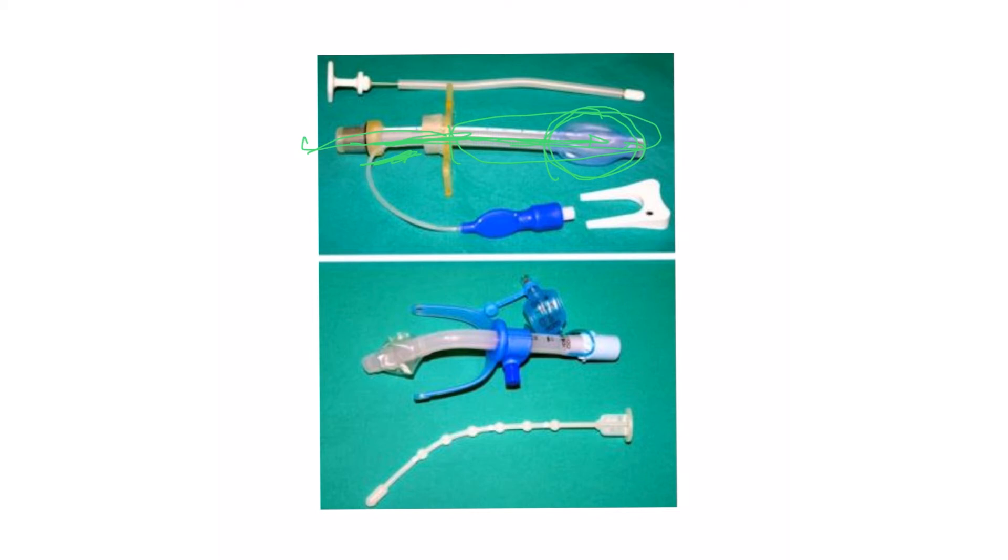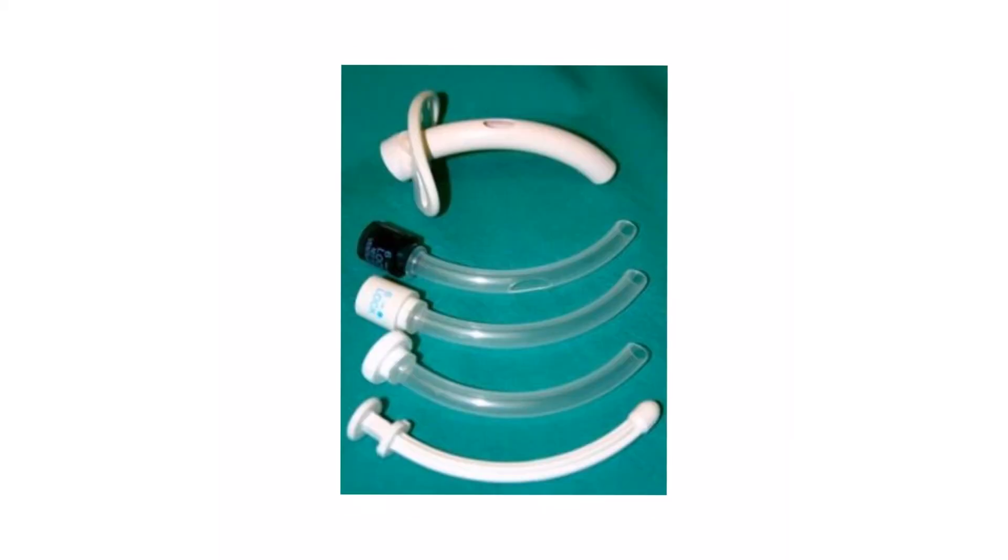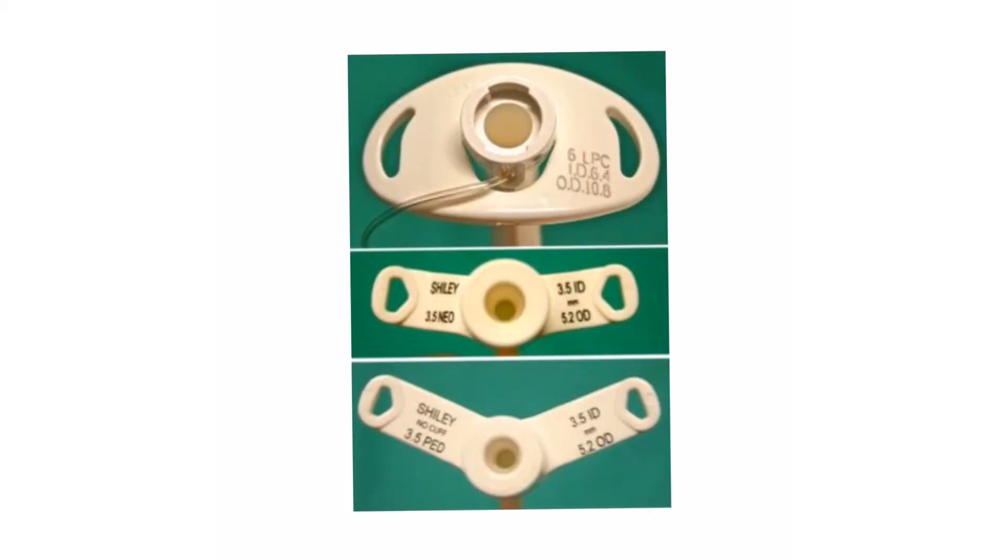That's part of the general care to continue to have suction periodically to prevent such catastrophic complications. This is another type which is fenestrated. You see this opening here. This is mainly used for somebody who's not on mechanical ventilation and in the process of weaning him off the tracheostomy tube.